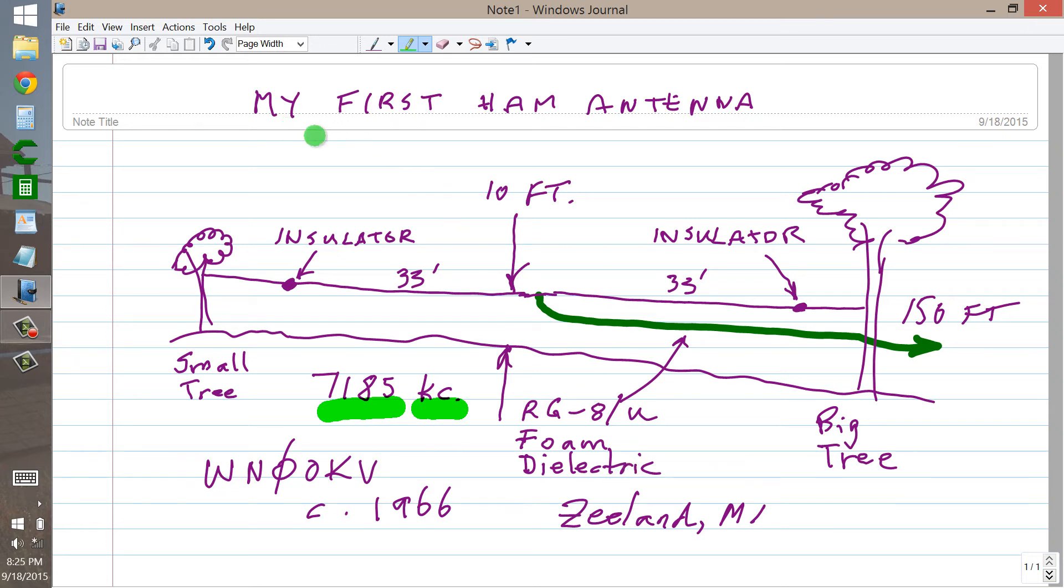So I went ahead and in 1967 became WA0OKV. Now I could use a VFO and I got one, a Knight kit VFO, and plugged it into the Johnson Viking Adventurer. Well, that's a whole other story. I'm talking about the antenna here, and here it is, in all of its inglorious, imperfect design.